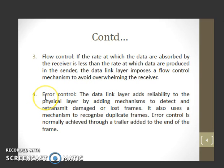Error control. The data link layer is responsible for error control also. It adds reliability to the physical layer by adding mechanisms to detect and retransmit damaged or lost frames. It also uses a mechanism to recognize duplicate frames.